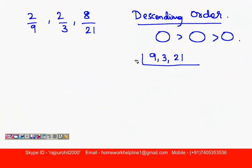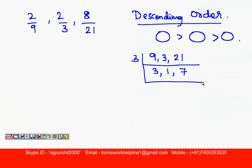All the numbers are divisible by 3. Dividing: 3, 3, 7 — the smaller number is 3.